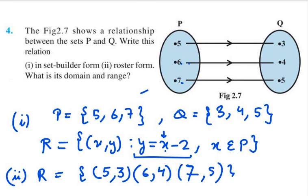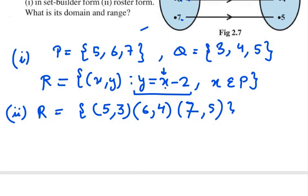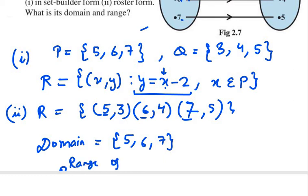Now we need to write its domain and range. So domain is the set of first element. So it will be 5, 6 and 7. This is domain and then we need to write range. So range of R will be the second element from R. So it is 3, it is 4, it is 5. So that's all for question number 4. Thank you for watching this.